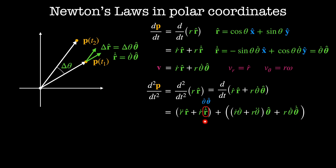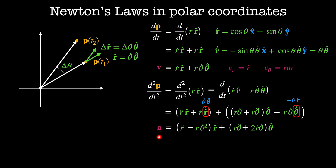We know that r-hat-dot equals theta-dot times theta-hat. And by using an equivalent argument, we can show that theta-hat-dot equals minus theta-dot times r-hat. If we collect terms in the r-hat and theta-hat directions, we get that the acceleration of P is given by (r-double-dot minus r·theta-dot²) in the r-hat direction and (r·theta-double-dot plus 2·r-dot·theta-dot) in the theta-hat direction.